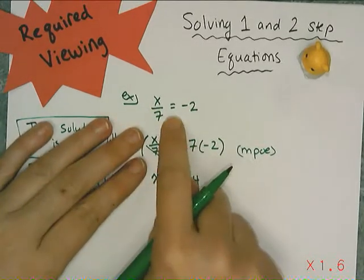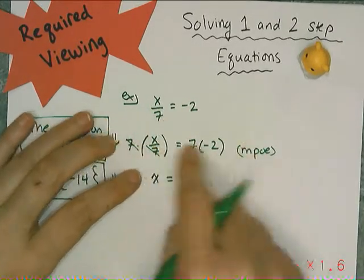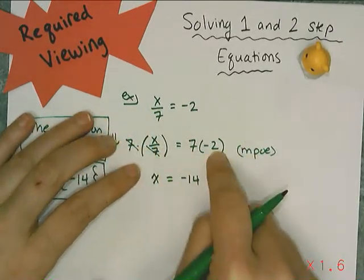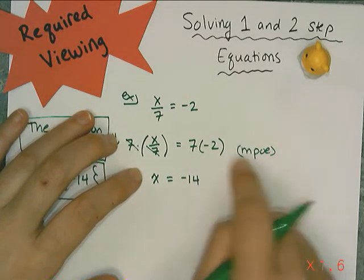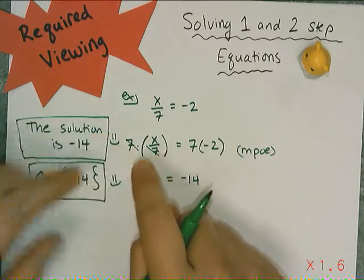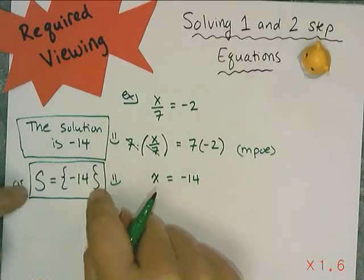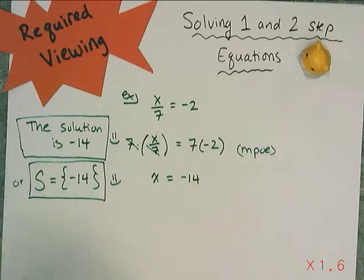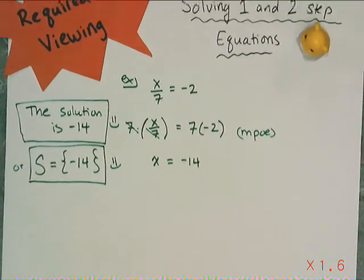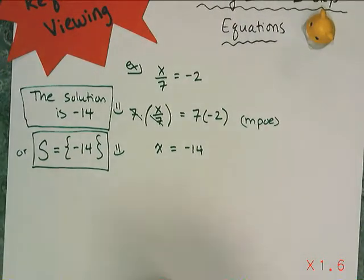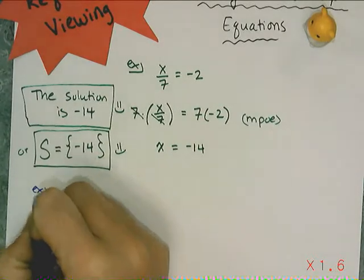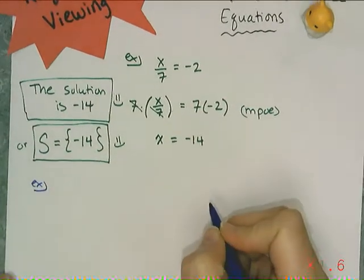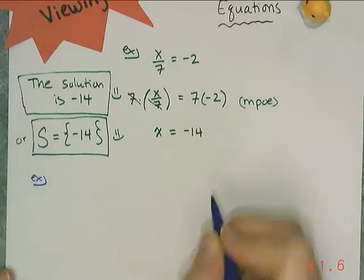This is what the work is going to look like — I want to see the step you use, the property you use to justify that step, and then your answer. Now let's look at an example where I have to use DPO — the division property of equality.